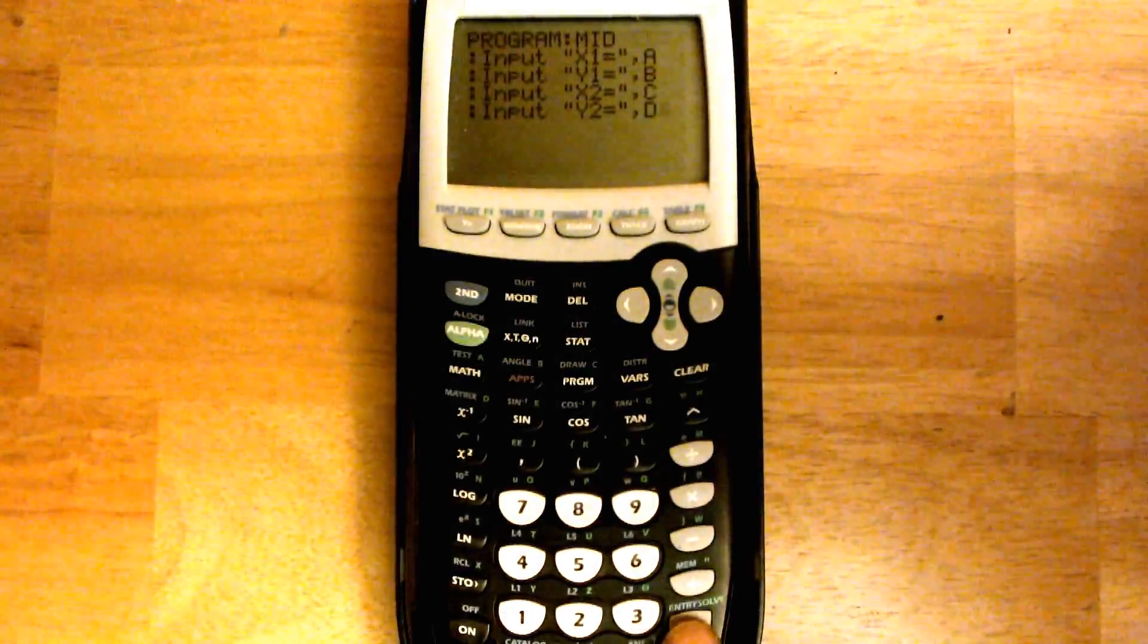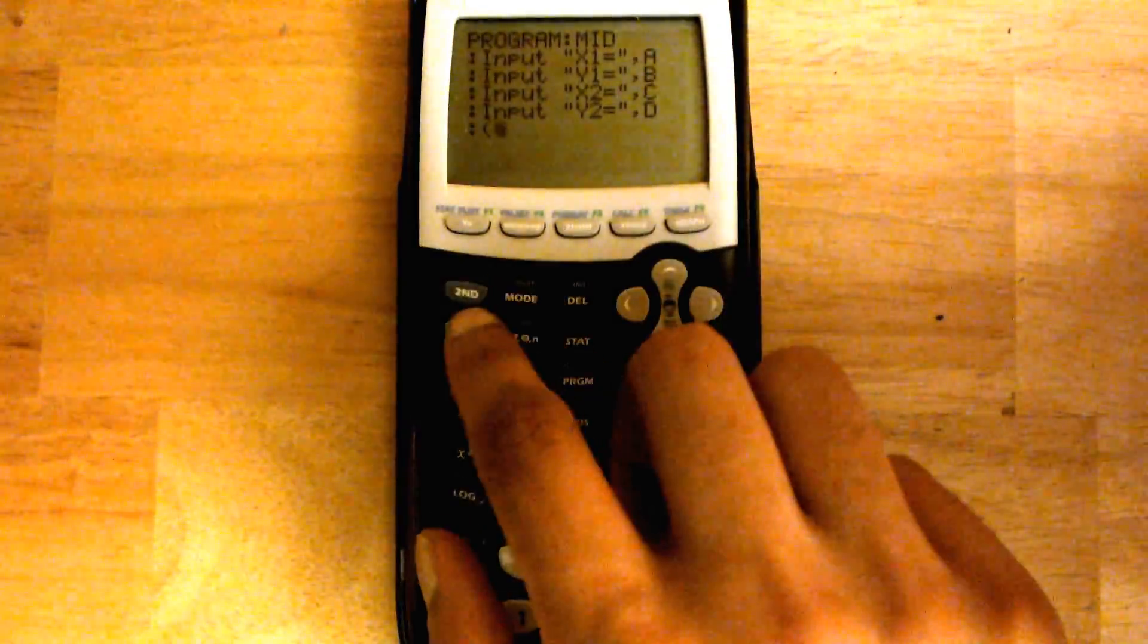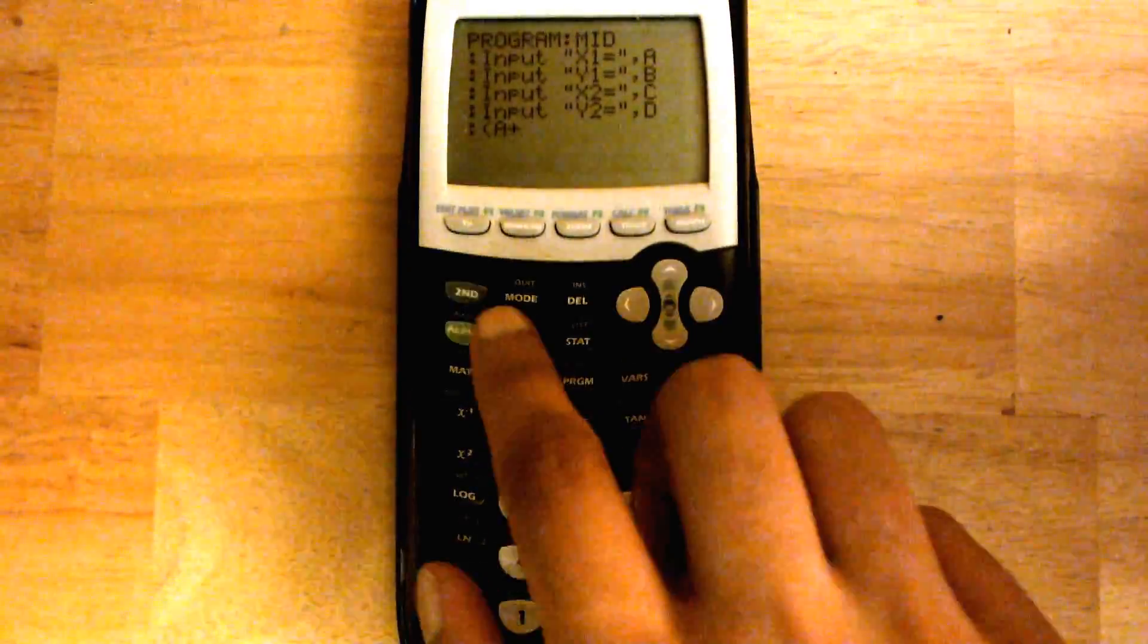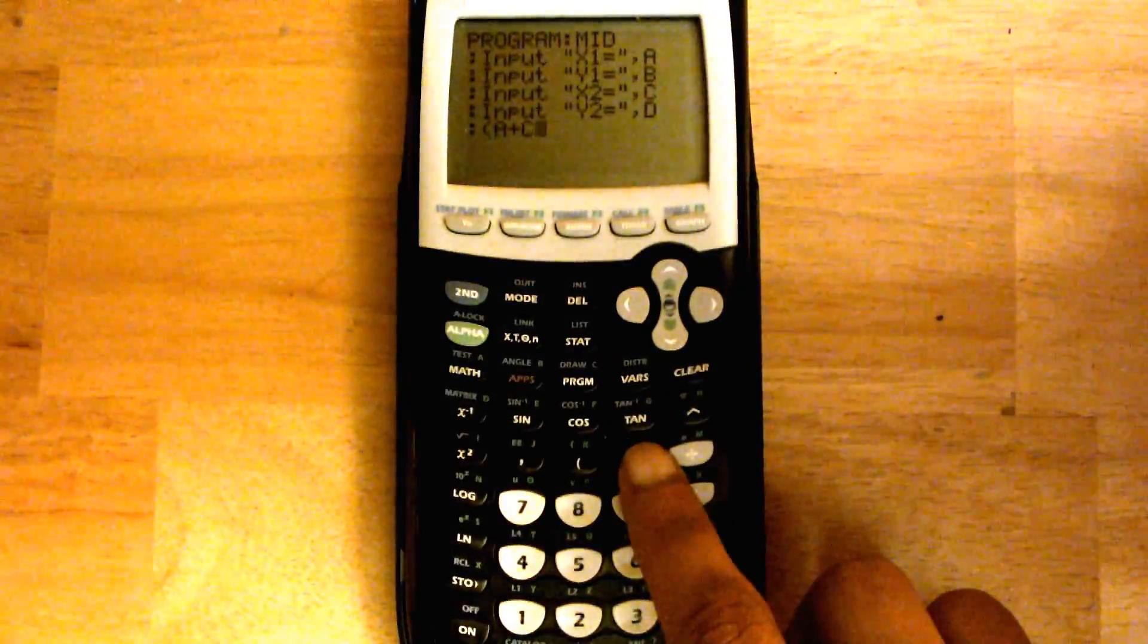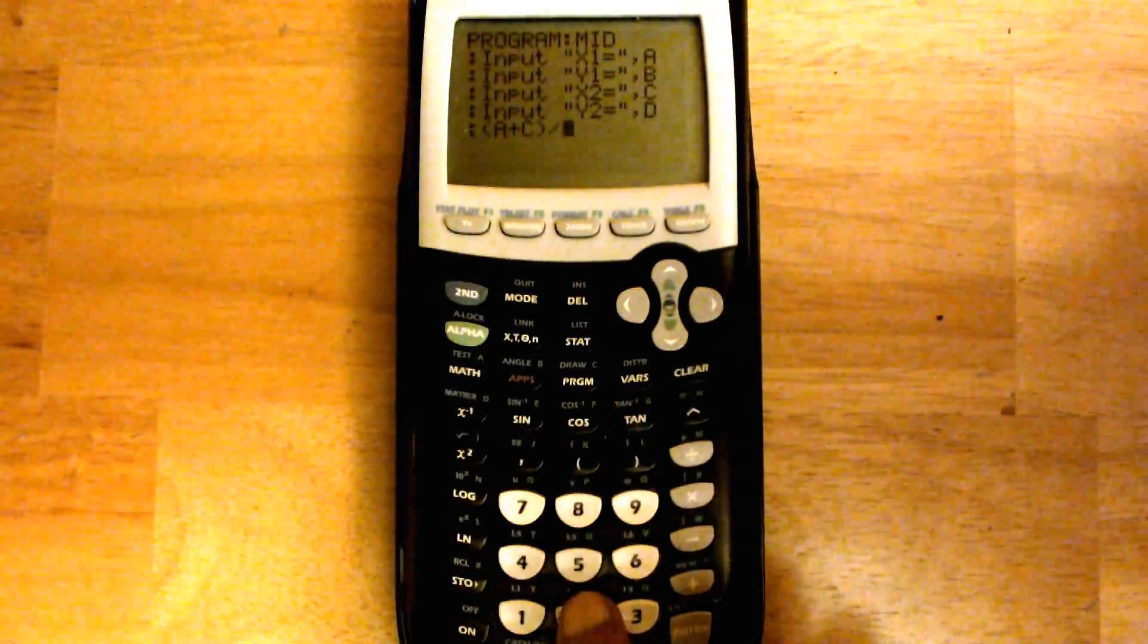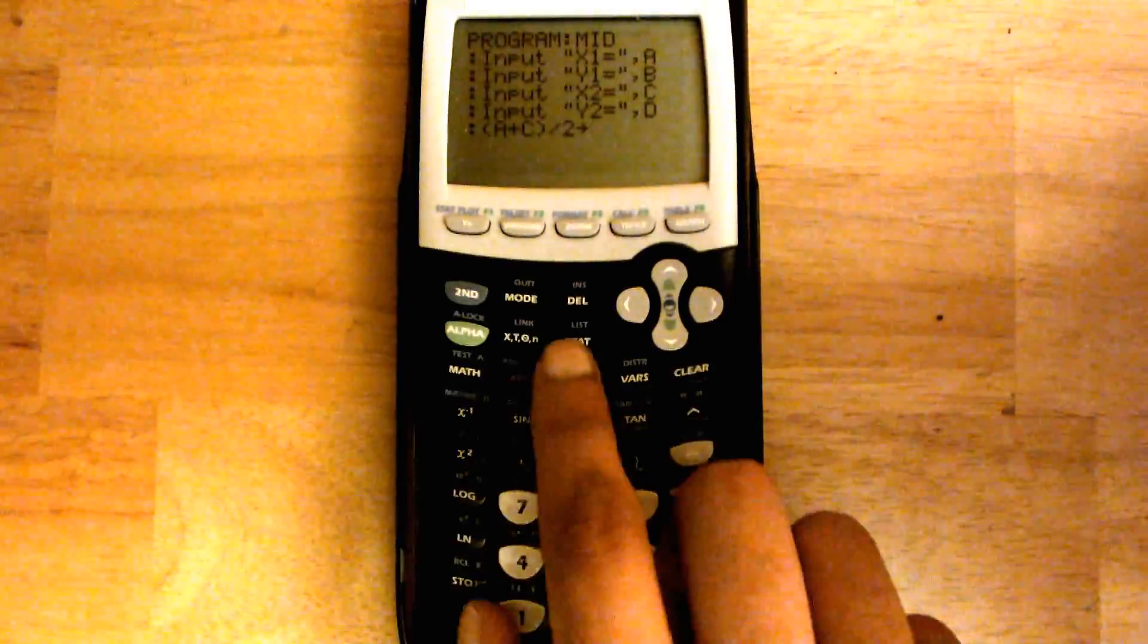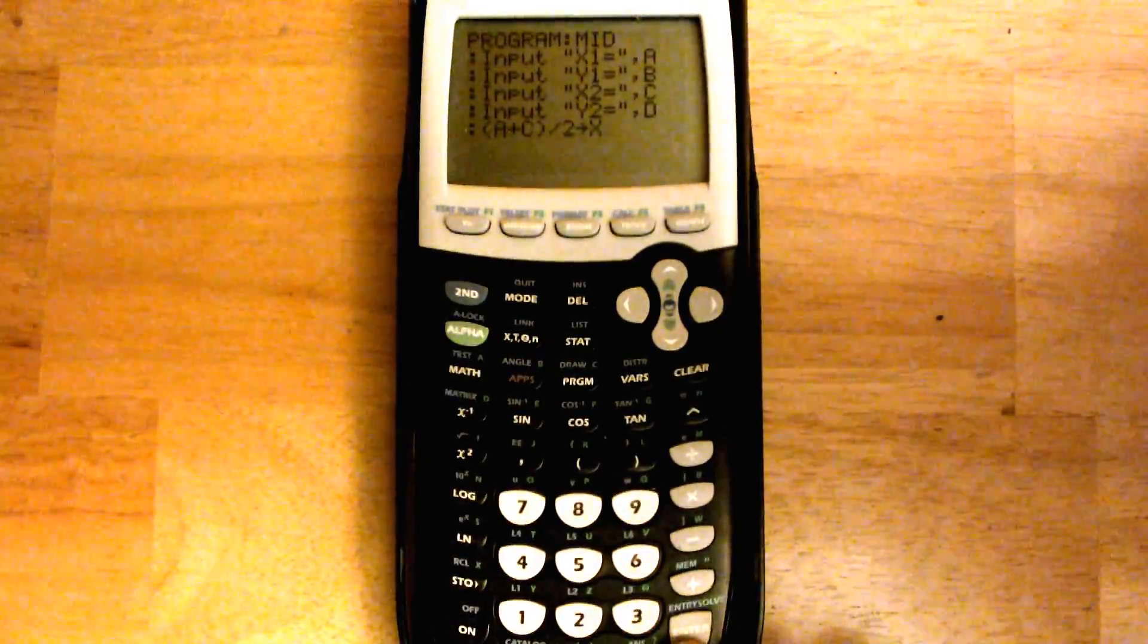And then hit enter again. Then we're going to do open parenthesis, alpha a, plus, alpha c, close parenthesis, divided by 2. And then we're going to store it, store buttons right here. Store it into x, just hit this. And then hit enter again.